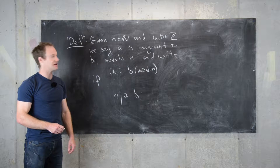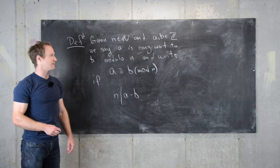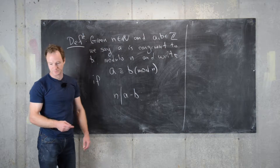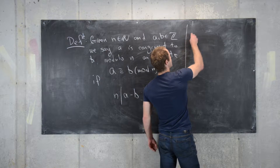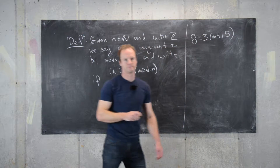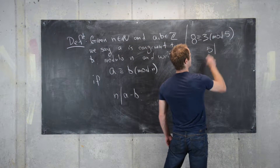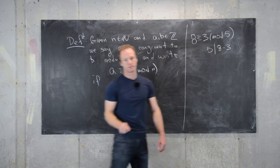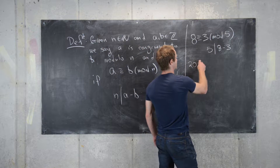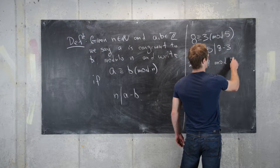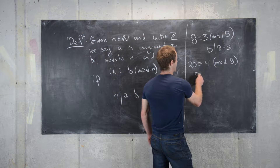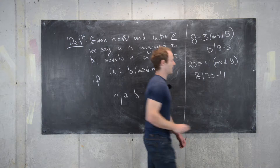Let's look at some basic examples. Eight is congruent to three mod five because five divides eight minus three, which is five. Twenty is congruent to four mod eight because eight divides twenty minus four, which is sixteen.